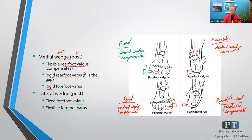Finally, for a flexible forefoot varus, we're going to use a lateral wedge. In this case, we're trying to correct the problem. If you place a lateral wedge, what that does is push the toes back up into a more neutral position so that all five rays touch the surface at the exact same time — correcting the problem.